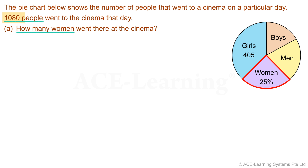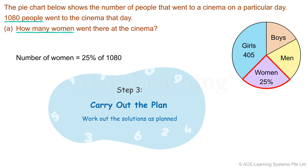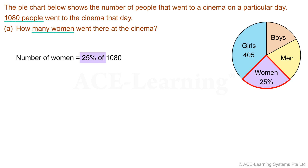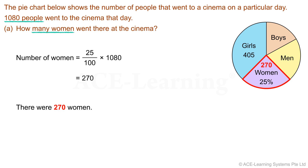The total number of people present at the cinema that day was 1,080, so the number of women present is 25% of 1,080. Step 3: Carry out the plan. Number of women = 25/100 × 1,080 = 270. There were 270 women.